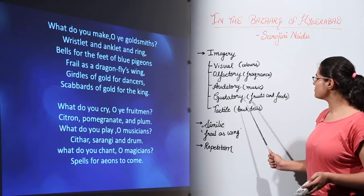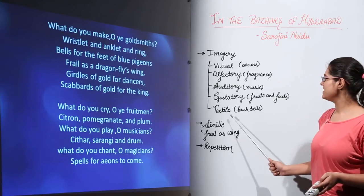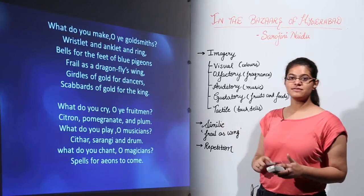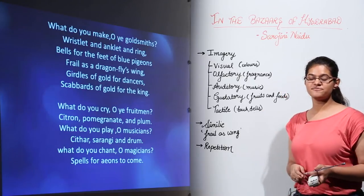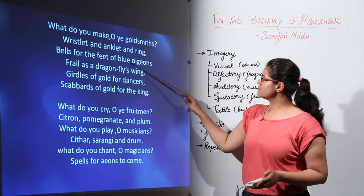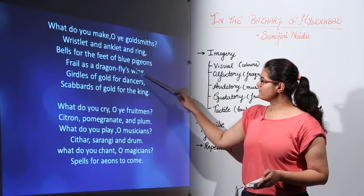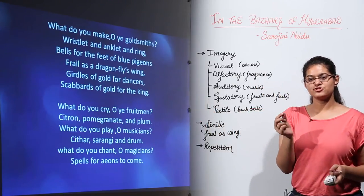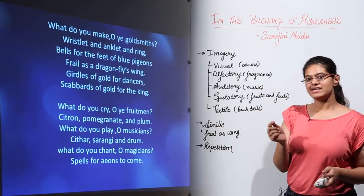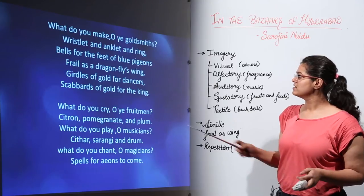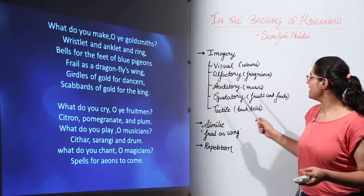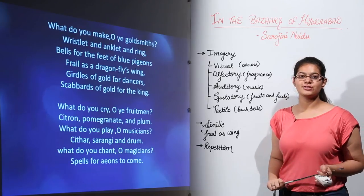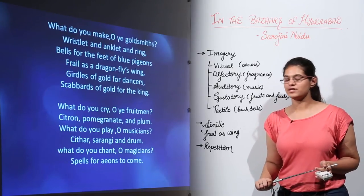They are all a part of gustatory imagery. Next we have tactile imagery — that is the sense of touch. When we talk about the bluebells, we see that they are as fragile as a dragonfly's wing, so we want to touch them. That is tactile imagery. So all five sorts of imagery have been used by the poet.